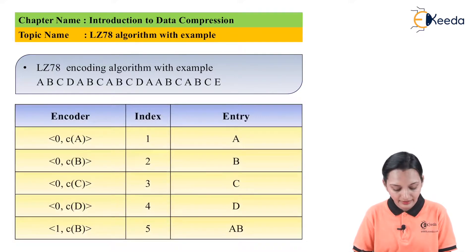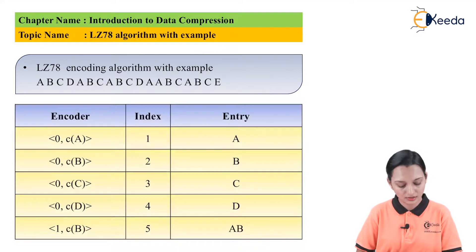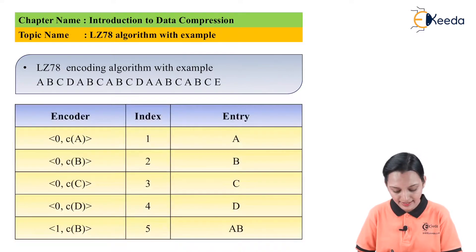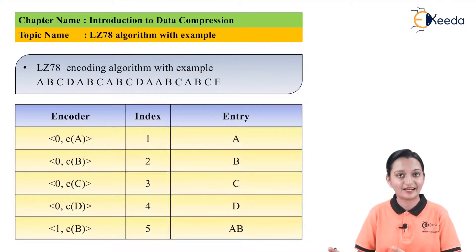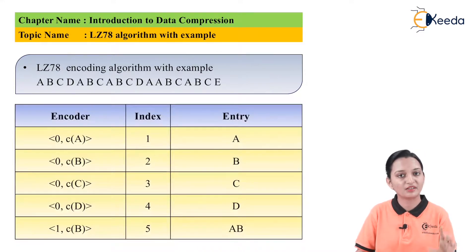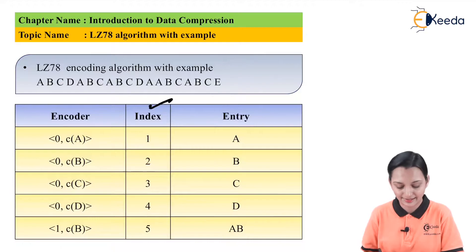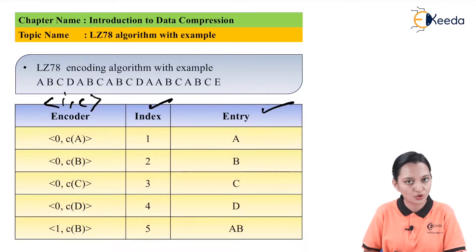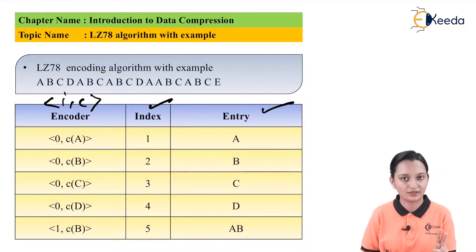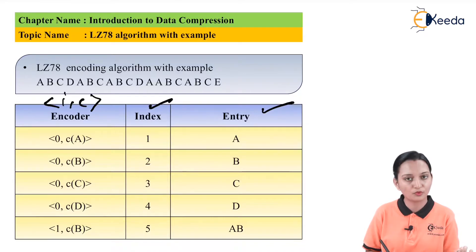As shown in the LZ78 encoding algorithm, we have been given a code: a, b, c, d, a, b, c, a, b, c, d, a, b, c, a, b, c, d, a, b, c, a, b, c, e. The example can contain 20, 30, or 40 characters because this is a very simple technique to encode or decode the data. What you require to do? Only two easy steps: first is index and second is entry, written in encoder form containing i and c — that is index and codeword. You have to write down two types of index: the first is simply a series from 1, 2, 3, 4, 5, 6 and so on, and the second is the index for the encoded output.